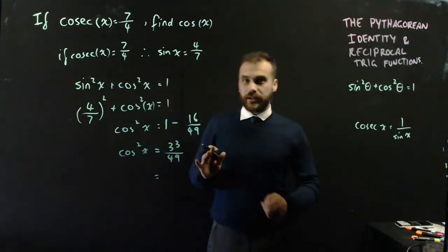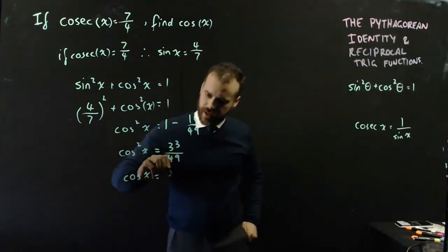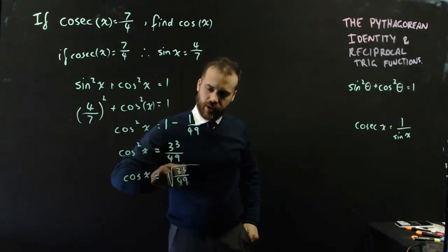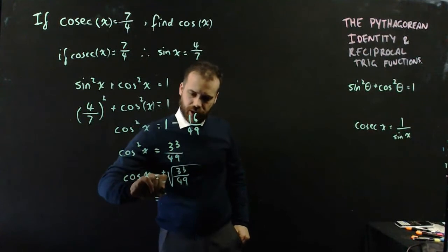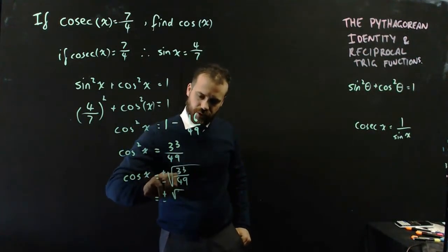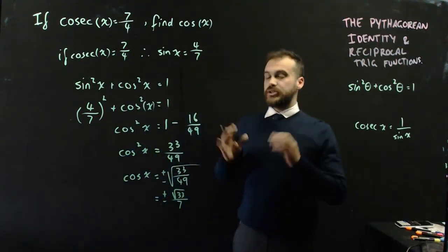And finally, that means that cos x, which is what we came here for in the first place, is the square root of 33 over 49 plus or minus, which we should probably go one step further and say that that's the square root of 33 over 7.